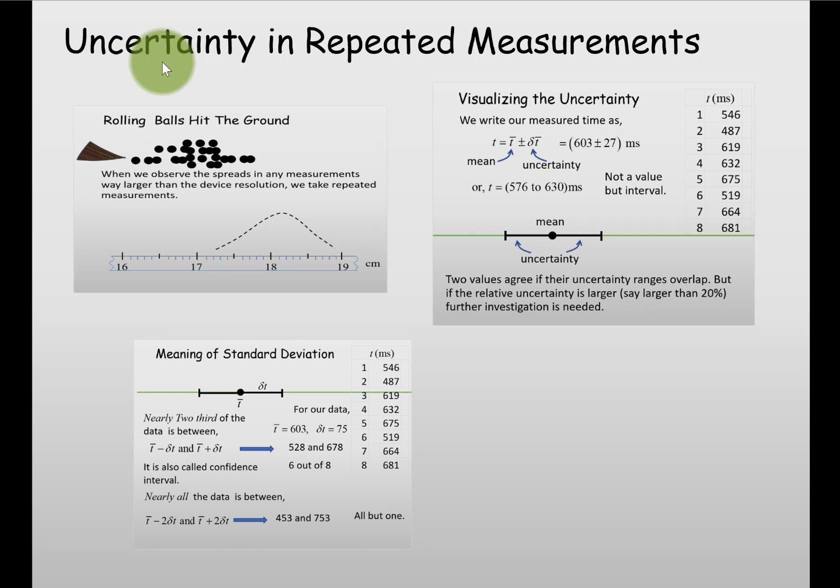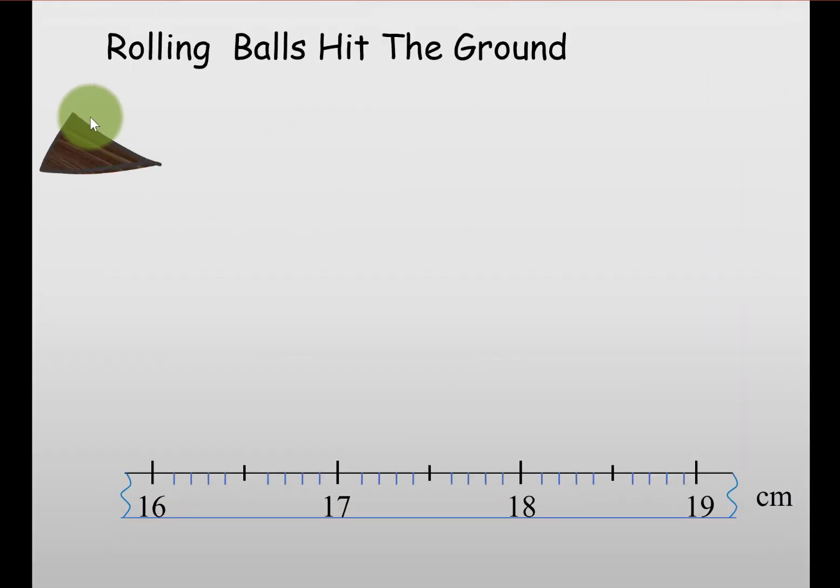In this recording we'll learn how to calculate uncertainty in repeated measurements and how to visualize that uncertainty. For example, a ball rolls from an inclined plane and lands on the ground near, let's say, 17.5 centimeters.